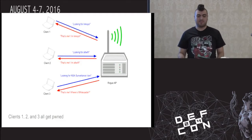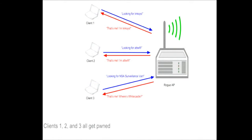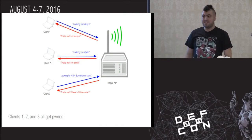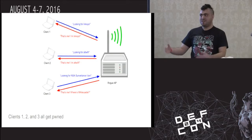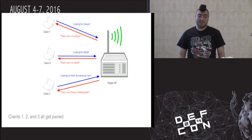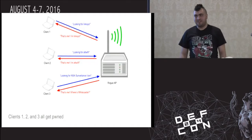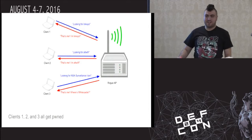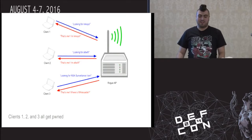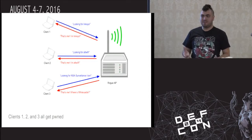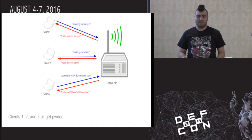So what this means is that if we set up a rogue access point and have it gratuitously respond to every single probe request it receives — for example, some client sends out a probe request for Linksys and we just respond saying "yeah, I'm Linksys, go ahead and connect" — that device will automatically connect. Then from the same access point, if we receive another probe request for a different SSID, like AT&T Wi-Fi, the rogue AP sends a response for AT&T Wi-Fi and that second client connects as well. So you have a single access point responding to every single probe request it receives, regardless of whether or not it's actually for itself.